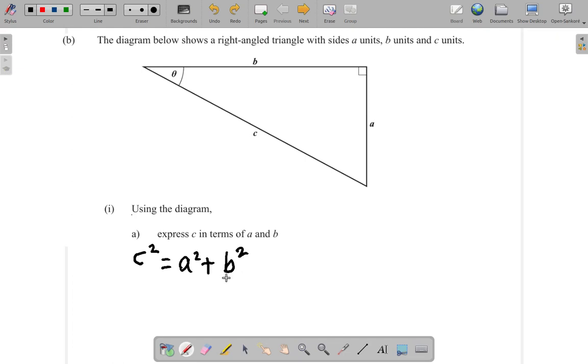We could write C squared equals B squared plus A squared. Same thing, but I just wanted to have it in alphabetical order and put A before B.